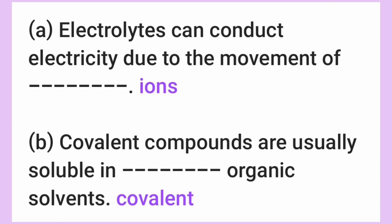Number A: Electrolytes can conduct electricity due to the movement of ions. Electrolytes lia lai yi liha, ions de yue shia jin zhao lia shi kuh nai ne. Epshi eeka ions paa. Number B: Covalent compounds are usually soluble in covalent organic solvents. Epshi eek kovalen maa.